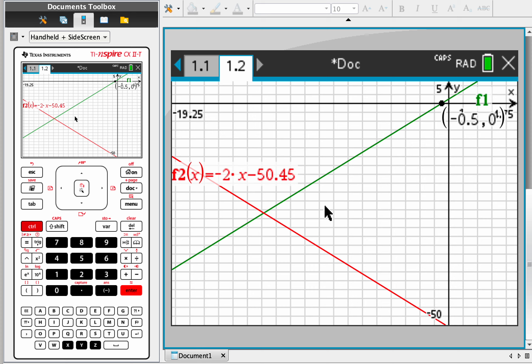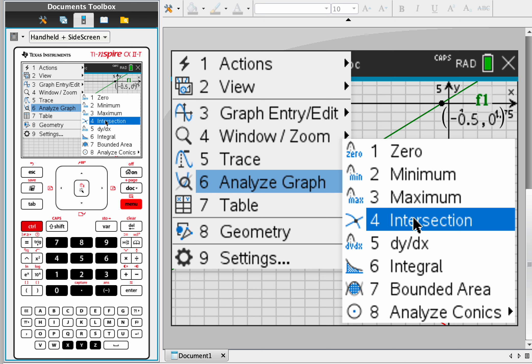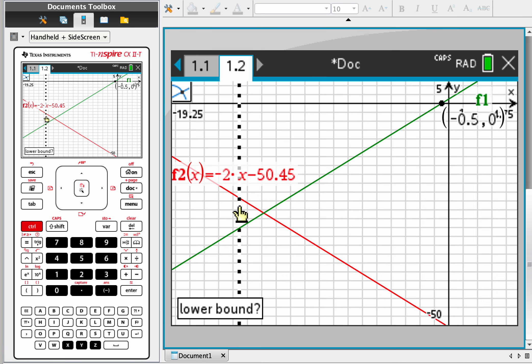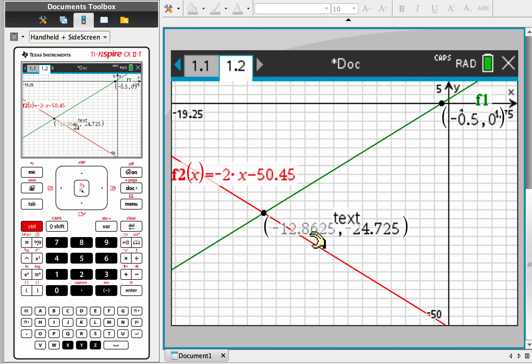The last main thing I'll show you for now is how do we determine the intersection between these two lines, the intersection point. Well, let's go to menu, analyze graph, intersection, and just lower bound, so to the left of that, and then to the right, and there's the intersection point.